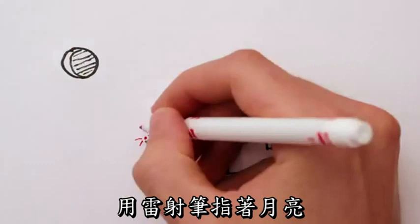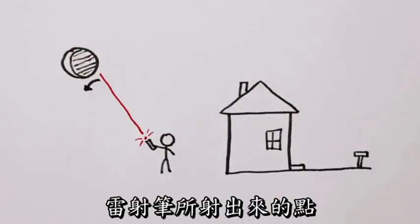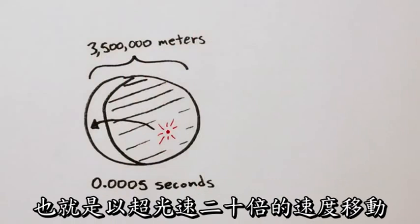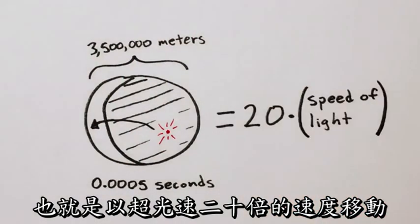All you have to do is point a laser beam at the moon and flick your wrist. The spot of light from the laser beam will travel across the moon's face in about half a millisecond, which means it's traveling at 20 times the speed of light.